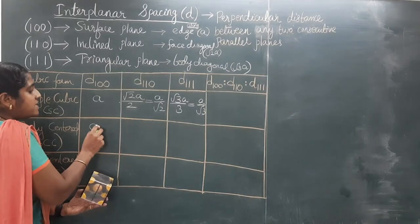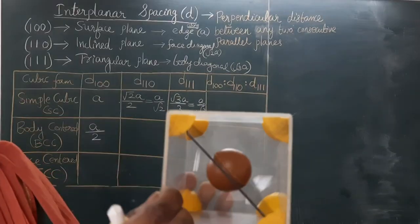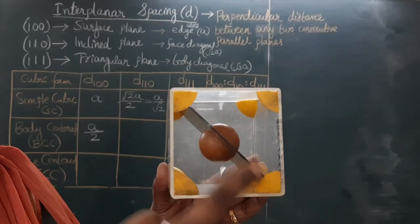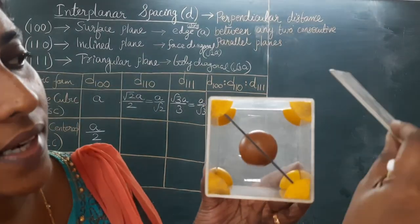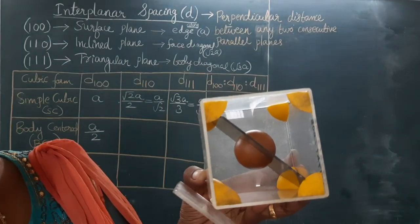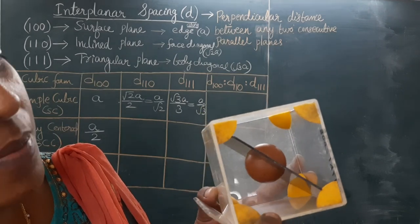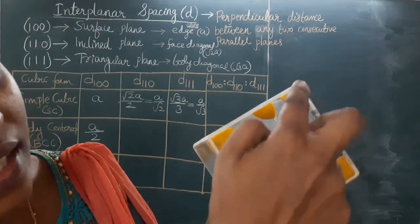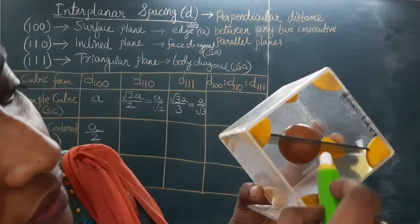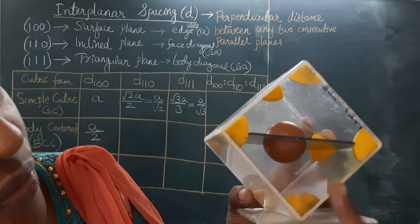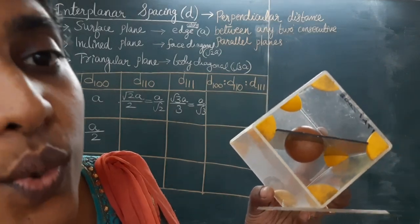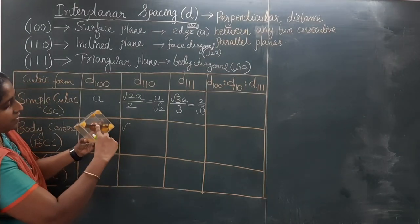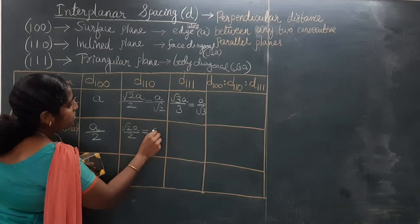Now see this cubical structure — this is BCC since the atom is also at the center. The inclined plane corresponds to the 110 family. There are a total of three planes possible in this unit cell: one on the top, second in the middle, third at the bottom. There are two perpendicular distances along the face diagonal. So the distance between adjacent parallel planes will be half of the face diagonal. Face diagonal is root 2 · A, so D(110) for BCC = root 2 · A divided by 2, which equals A by root 2.